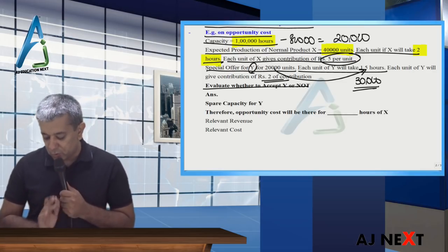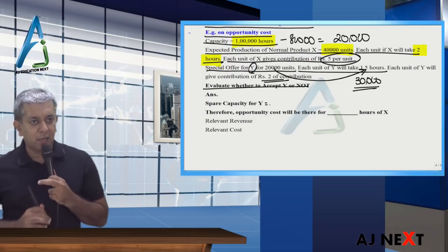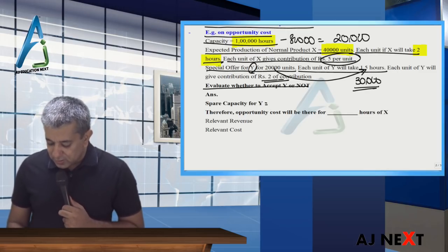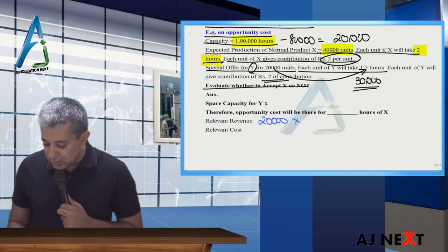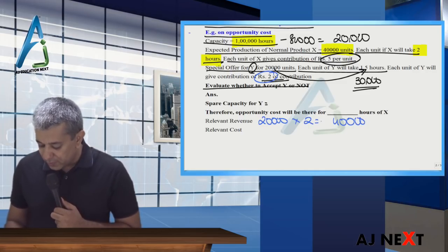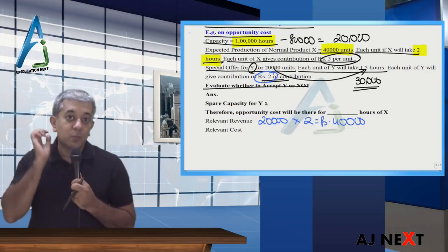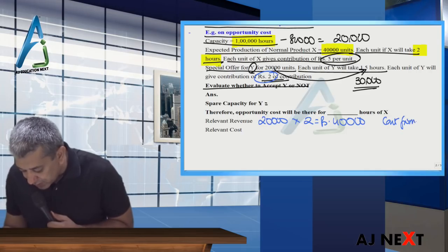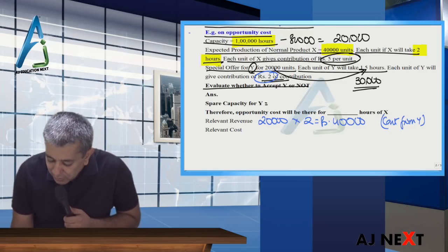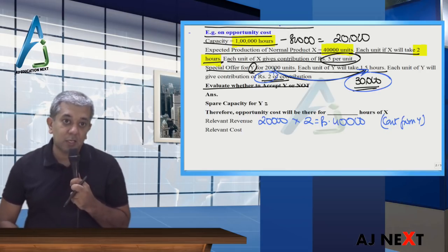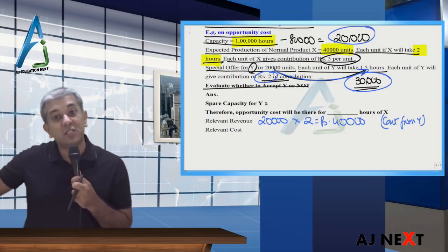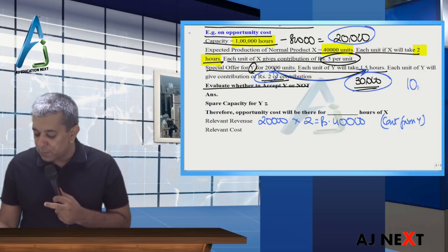First, think about how much you will earn from Y. Y has 20,000 units, and each unit gives 2 rupees contribution, so total contribution from Y is 40,000 rupees. Now, to produce Y, you need 30,000 hours, but after producing X, you only have 20,000 spare hours. So you are short by 10,000 hours. Since every order is indivisible, you cannot produce only part of Y.